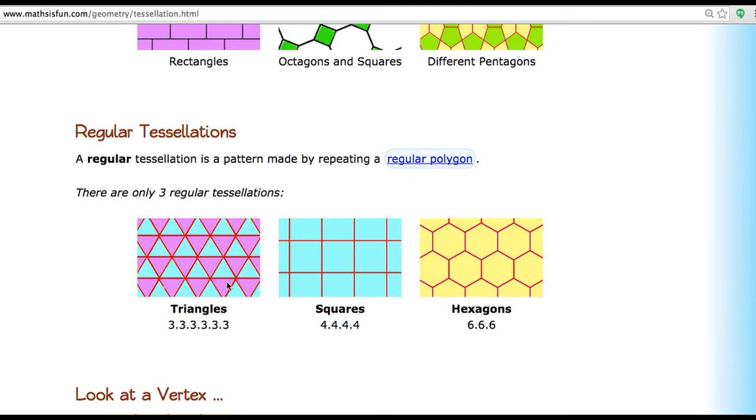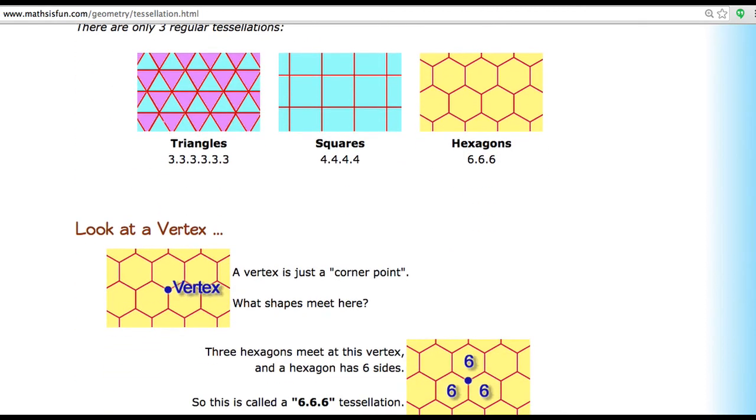You can either use triangles, squares, or hexagons. Looking at the vertex, a vertex is just the corner point in between the tiles, so different types of shapes can meet there.